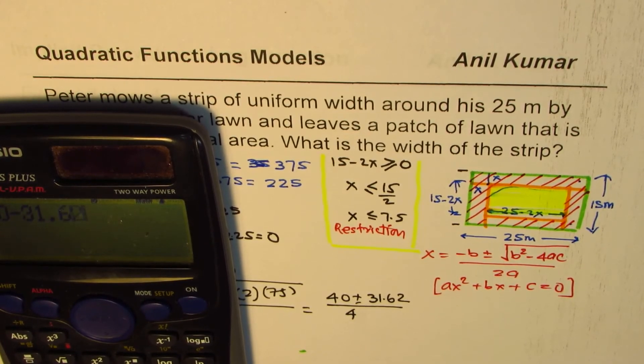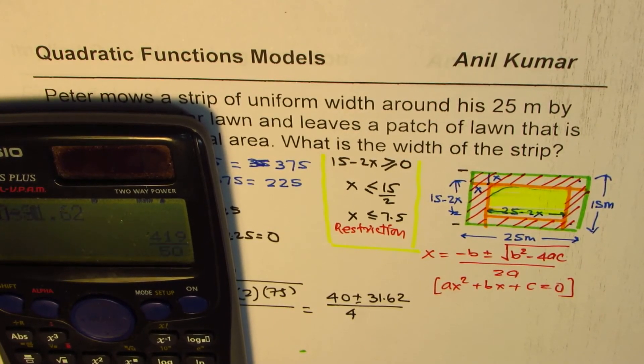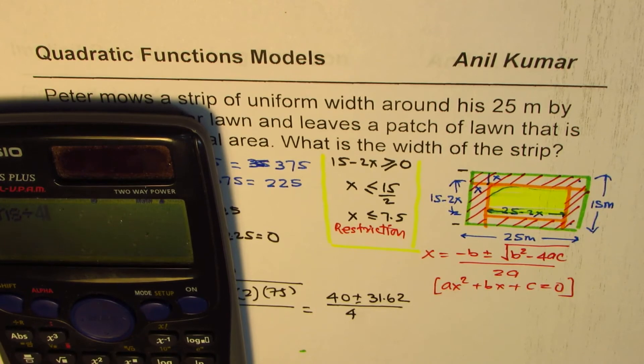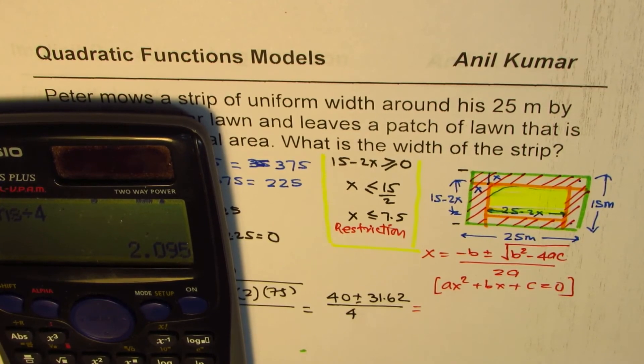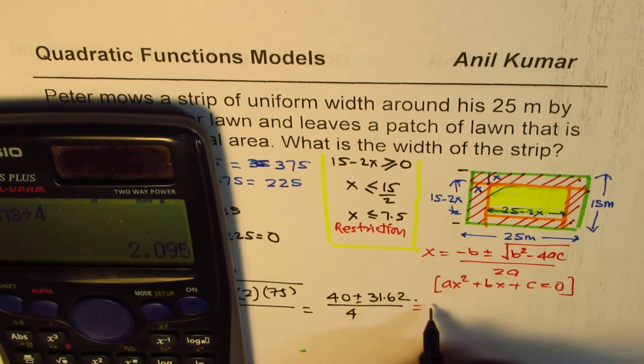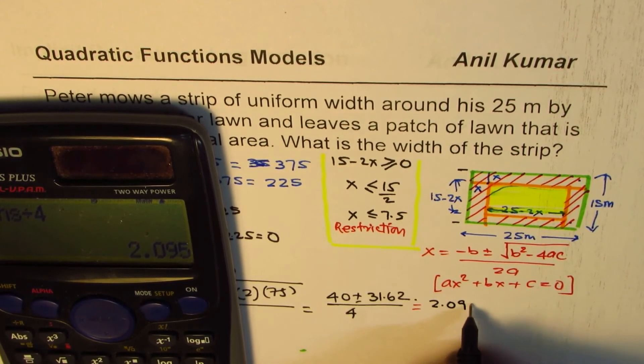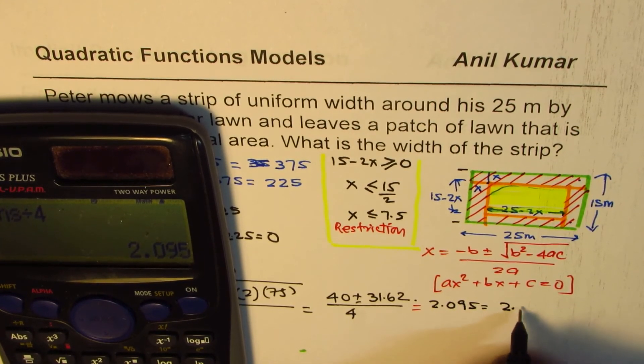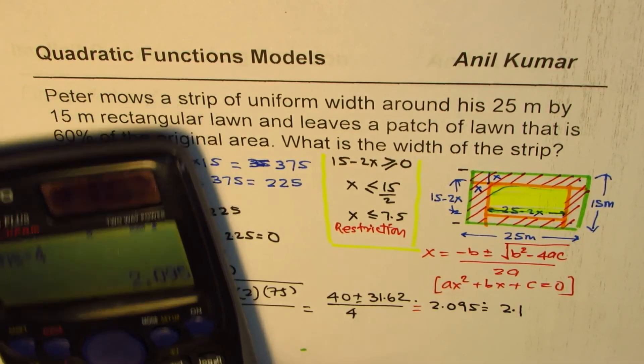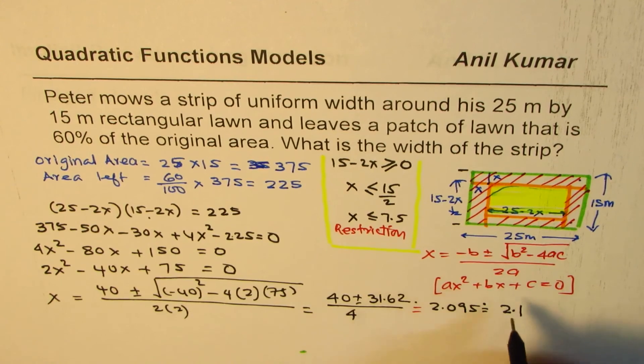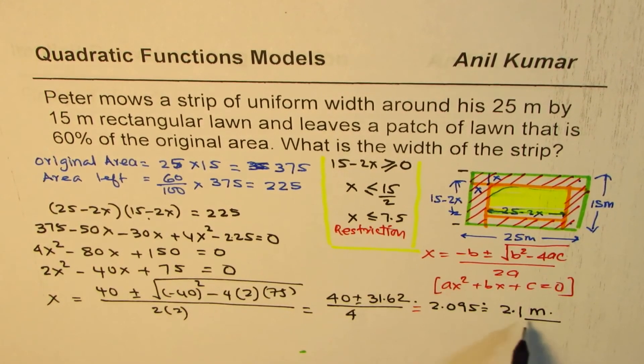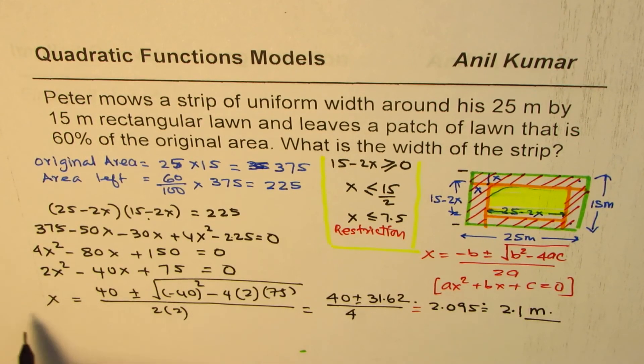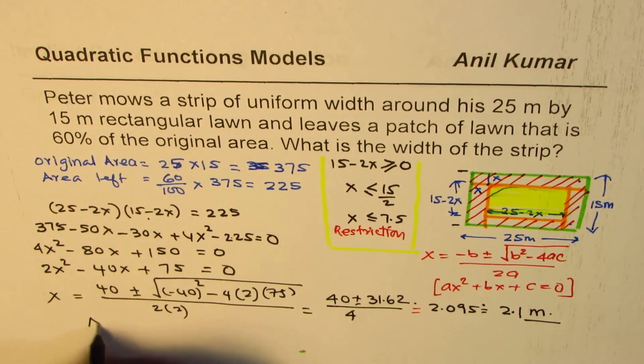That equals in decimals 2.095, approximately 2.1. So this equals, let me approximate this to 2.1 meters. What is the width of the strip? The width of the strip is 2.1 meters. X is the width of the strip.